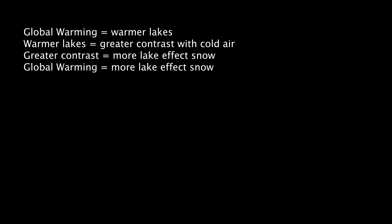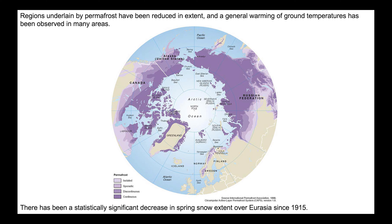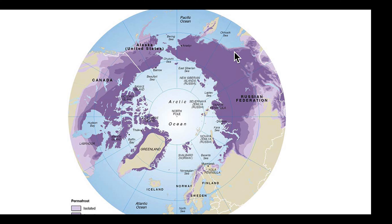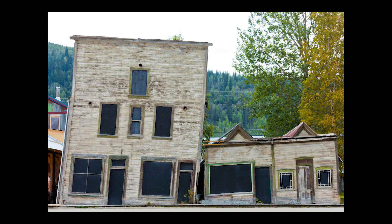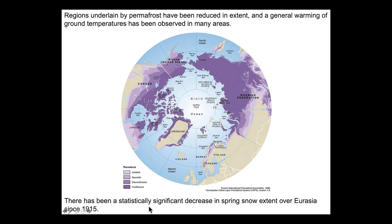Other climate changes in the 20th century include both regional and global anomalies. Regions underlain by permafrost have been reduced in extent — a growing concern in Russia, where oil fields in Siberia are threatened by melting permafrost, since the oil industry infrastructure is built on top of frozen ground. If that ground melts, the structures will collapse into mud. We've also seen a significant decrease in spring snow extent over Eurasia since 1915, with decreased springtime snow observed throughout the region, and something similar in North America as well.